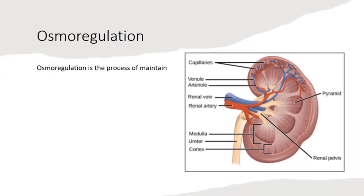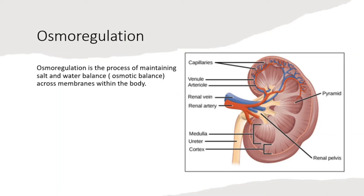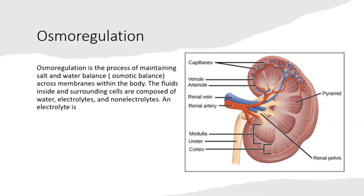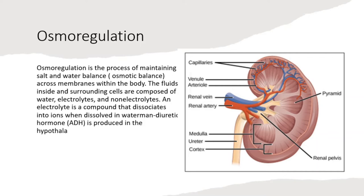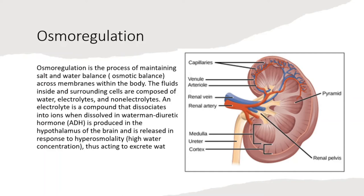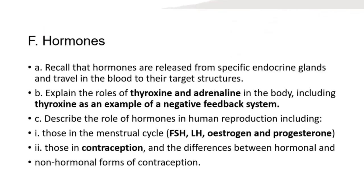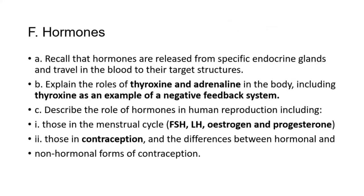Osmoregulation is the process of maintaining salt and water balance — osmotic balance — across membranes within the body. The fluids inside and surrounding cells are composed of water, electrolytes, and non-electrolytes. An electrolyte is a compound that dissociates into ions when dissolved in water. Antidiuretic hormone, ADH, is produced in the hypothalamus of the brain, and is released in response to high osmolality, acting to retain water via the excretory system.